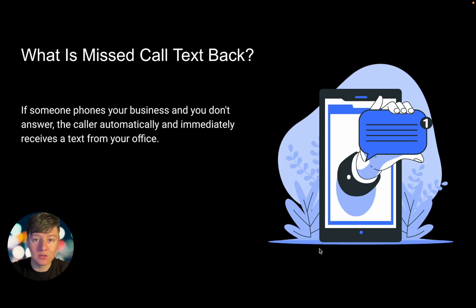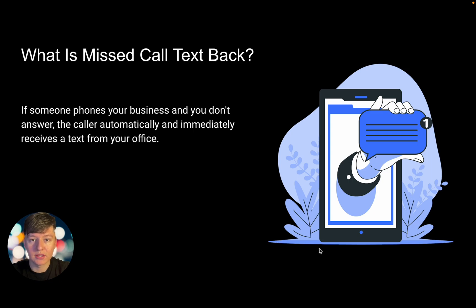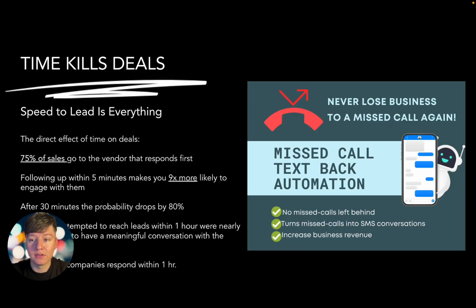So what exactly is the missed call text back feature? Whenever someone calls a business and the owner doesn't pick up, the person who called will automatically receive a text message saying something like 'Hey, sorry we can't come to the phone, how can we help?' The whole goal is to make sure the business owner is reaching out to the lead as soon as possible and not just ignoring them.